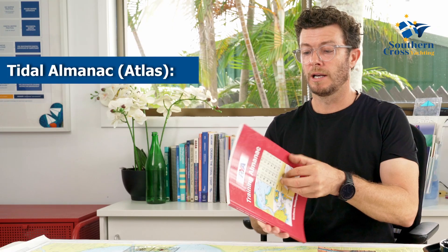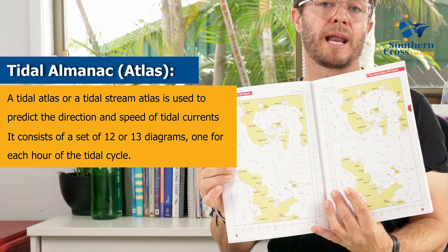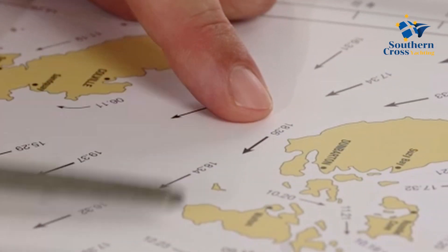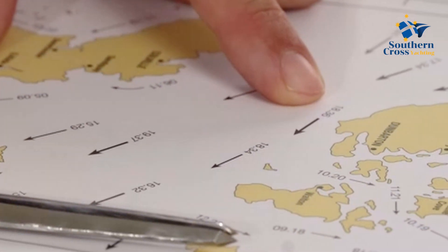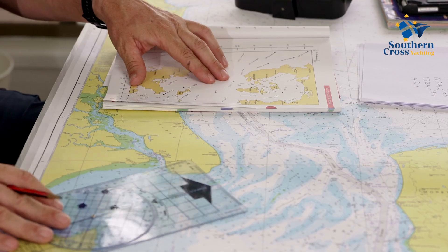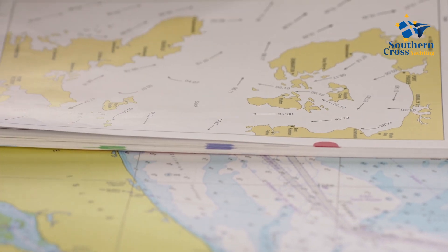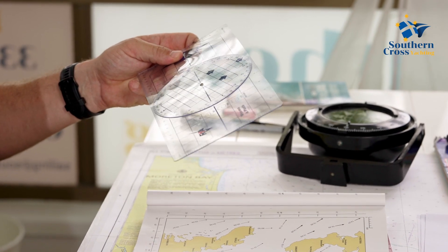When working out our compass course to steer, we need to know the set and drift of the tide. The tidal almanac — generally 13 pages — shows exactly how the tide comes in and out of an area. It has arrows showing the exact direction of the tide and also the speed. The terminology we use: 'set' is the direction of the tide, and 'drift' is the speed of the tide.